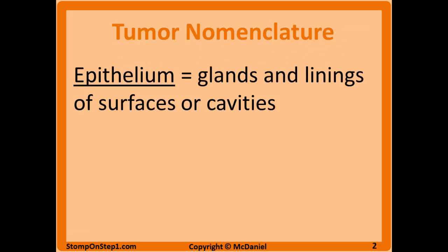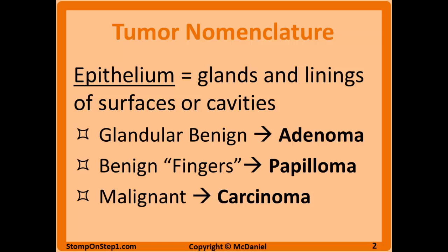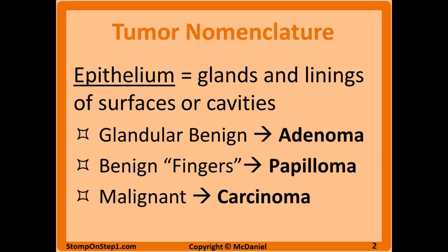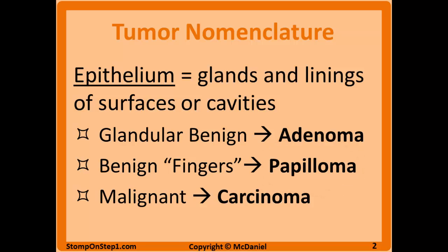Epithelium involves glands and linings of surfaces or cavities and has a more complicated naming system. Benign epithelial tumors that contain glandular tissue — such as prostate, adrenal glands, and certain types of colon cancers — are called adenomas. Adenomas often grow into the lumen of whatever organ they are in, forming a polyp. Cyst adenomas are hollow, cyst-like tumors usually filled with fluid. Benign tumors of stratified squamous epithelium that form cauliflower finger-like projections are called papillomas. Malignant epithelial tumors are called carcinomas.